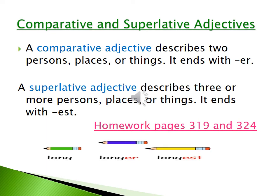Now, let's read together. Comparative and superlative adjectives: A comparative adjective describes two persons, places, or things. It ends with ER. A superlative adjective describes three or more persons, places, or things. It ends with EST.